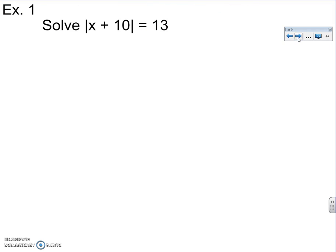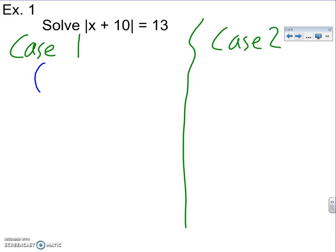Our first example is absolute value of x plus 10 equals 13. I see the absolute value signs, that means two cases. Case 1 will be my positive case, case 2 will be my negative case. To turn it the positive case, you just turn the absolute value to parentheses. The negative case is the same thing, but in front of that parentheses is now a negative sign.